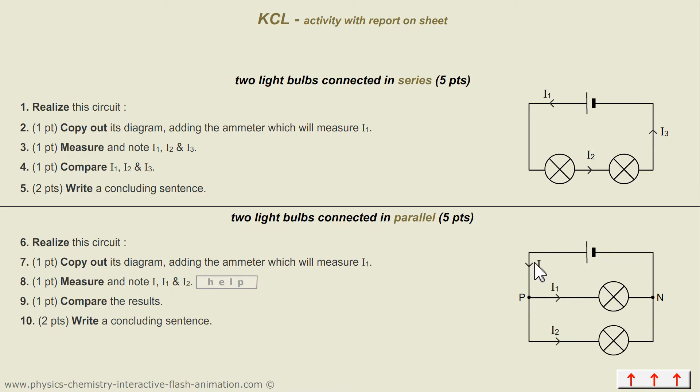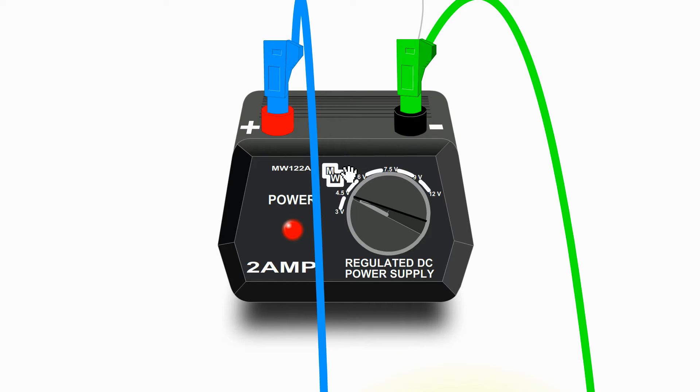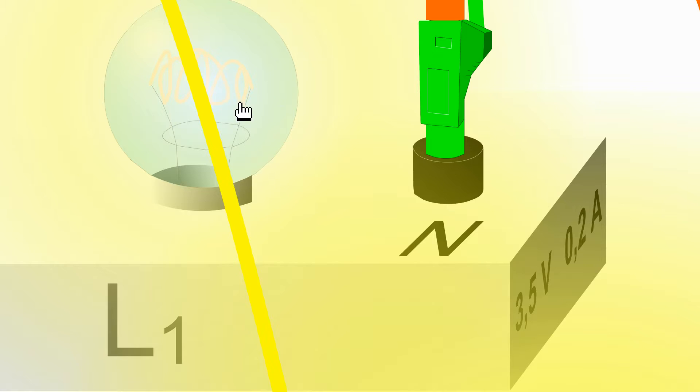In parallel, we will then be interested in node P by measuring the main current which arrives and the branch currents. Throughout the activity, the main switch of the DC power supply will be on 4.5 volts. The two bulbs used are different.